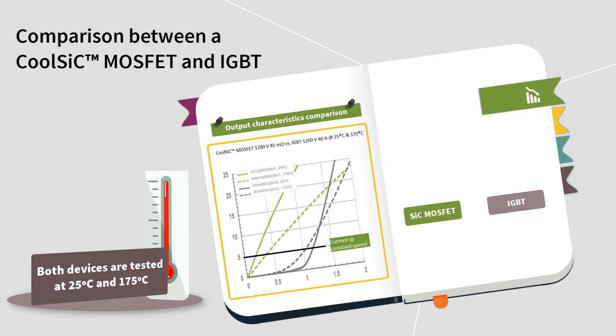By looking at the graphic, we can say that during constant speed mode, which is more than 90% of the time, the semiconductors work at a very low current. While at a low current, the silicon carbide MOSFET has a much lower power loss when compared to an IGBT.